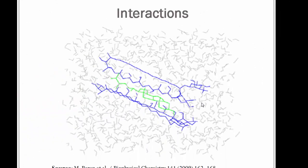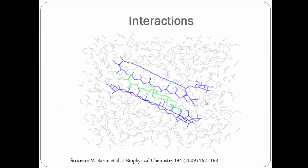Now let's look at how the interaction is taking place. Amphotericin B binds to ergosterol, but not in a one-to-one ratio. Based on a biophysical chemistry paper, Amphotericin B actually binds to ergosterol in a 2:1 stoichiometry — one Amphotericin B molecule attaches to another Amphotericin B molecule through van der Waals forces, with the ergosterol sandwiched in between.